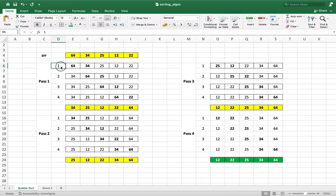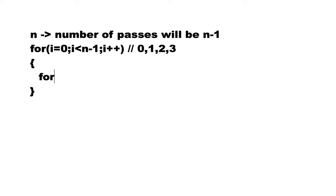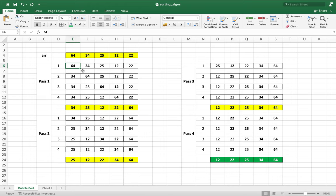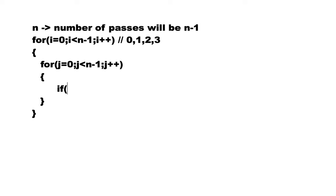i will start from zero because the index of an array starts from zero, and in the programming world things get much simpler if we start from zero. The end condition will be i less than n minus one, so the loop will run for zero, one, two, and three — that's four passes. Within each pass there are four iterations, so within the main for loop there will be another for loop: for j equals to zero; j less than n minus one; j plus plus. Now what's happening within each iteration is the element at index j is getting compared with the element at index j plus one. And if the element at index j is greater than the element at index j plus one, then the swap happens. So we write: if ARR[j] is greater than ARR[j+1].